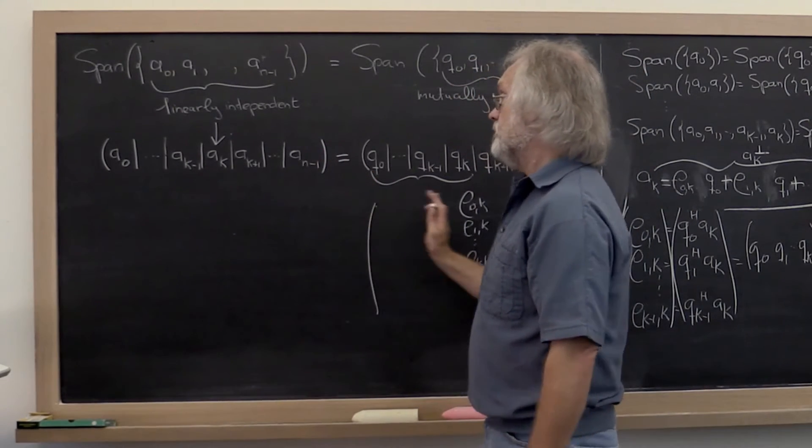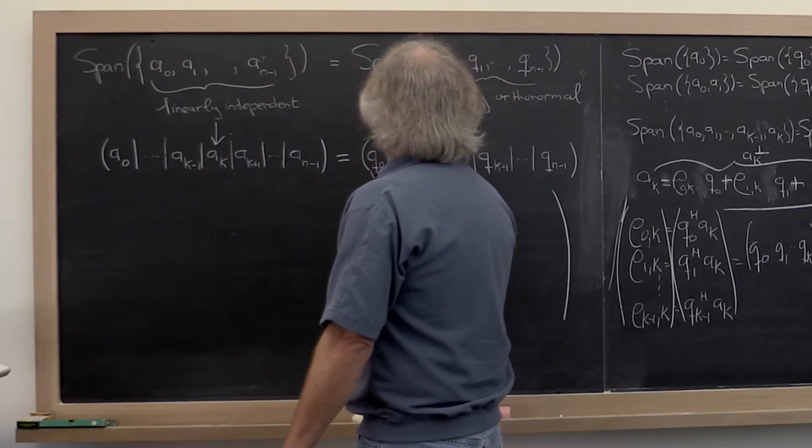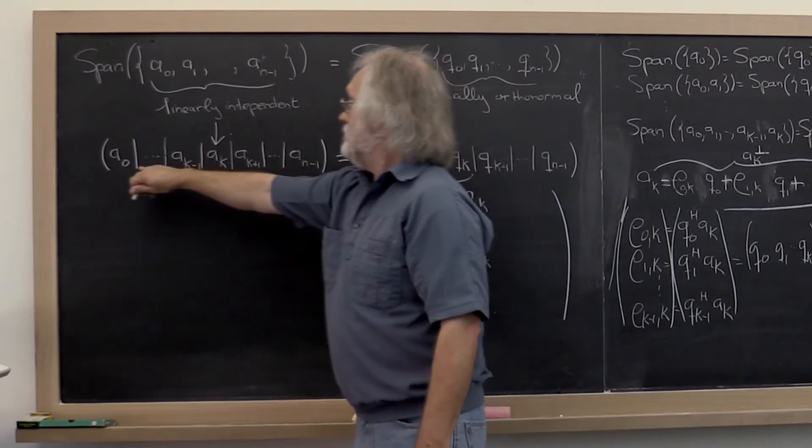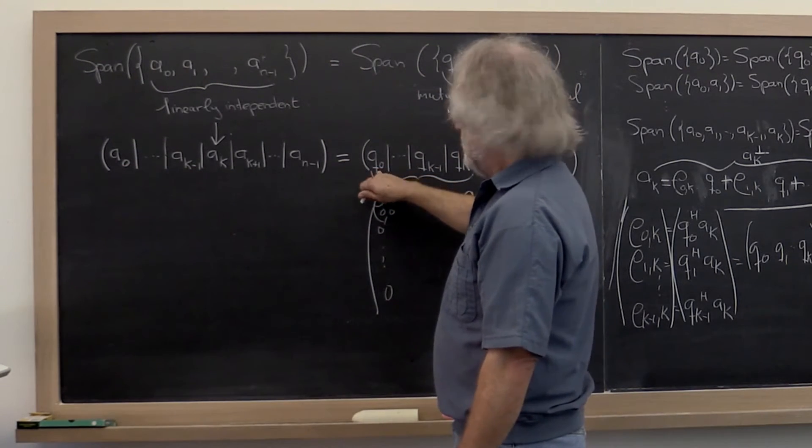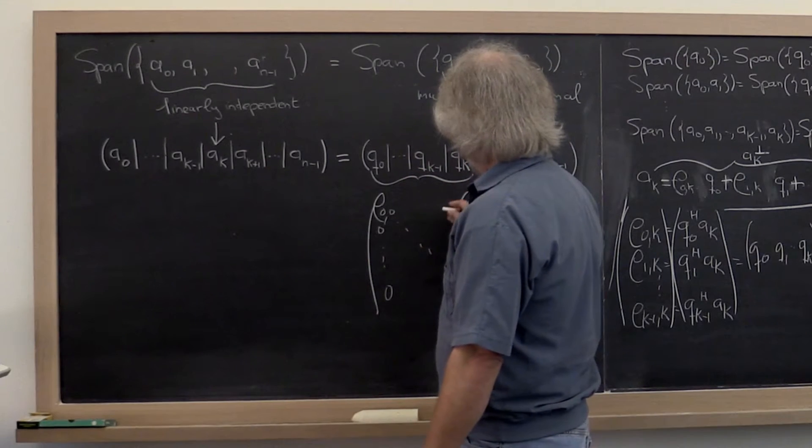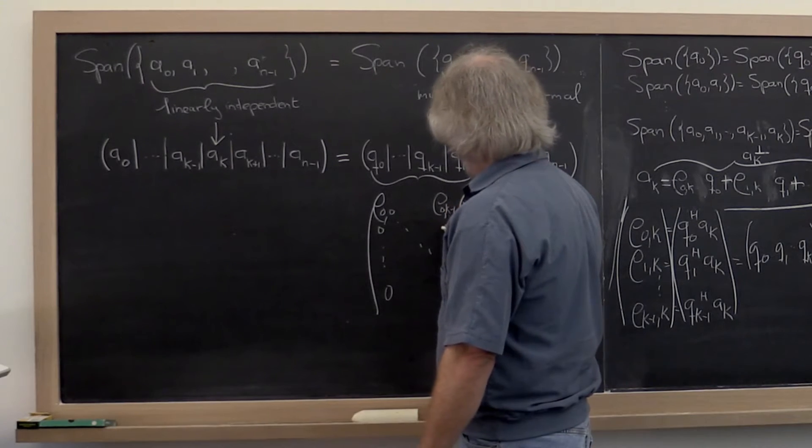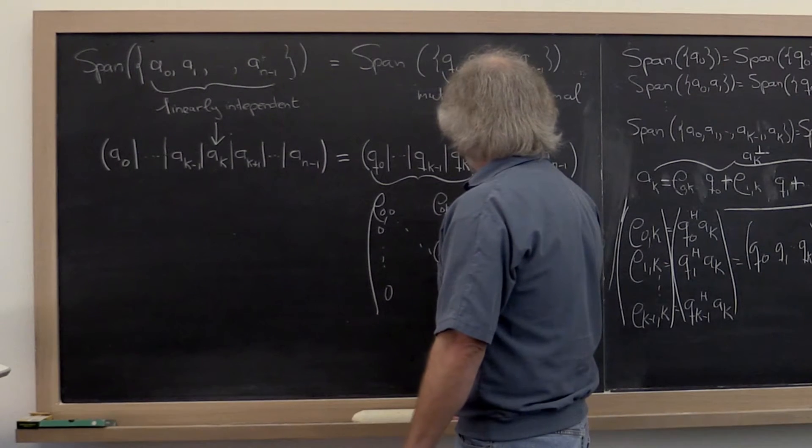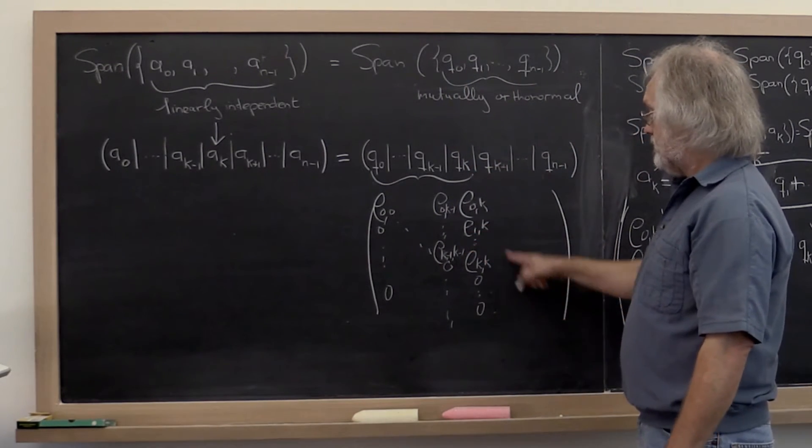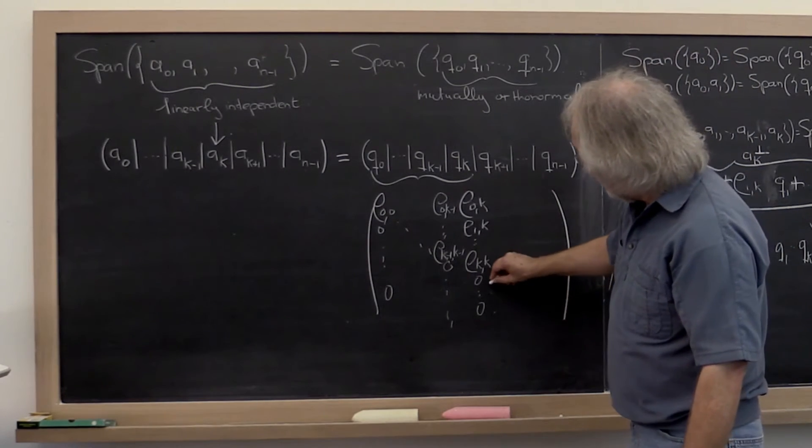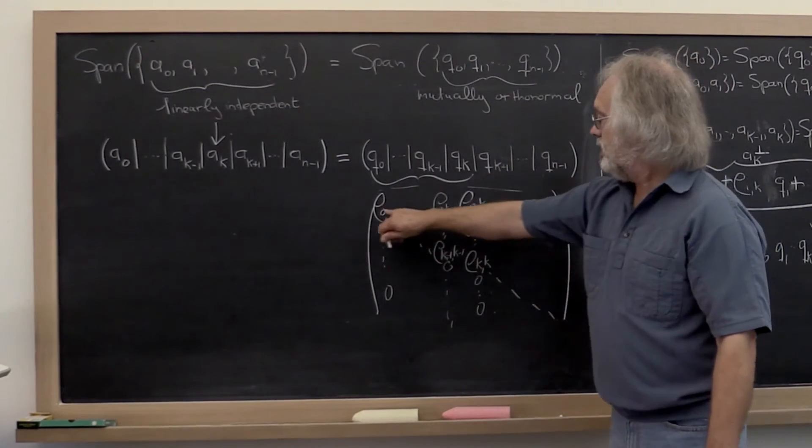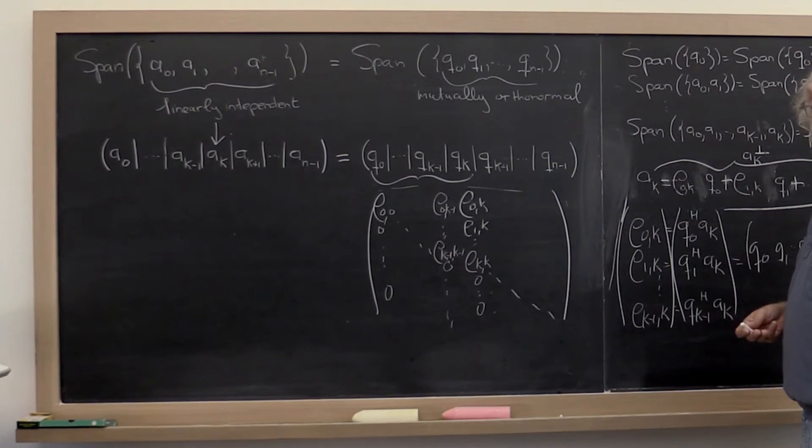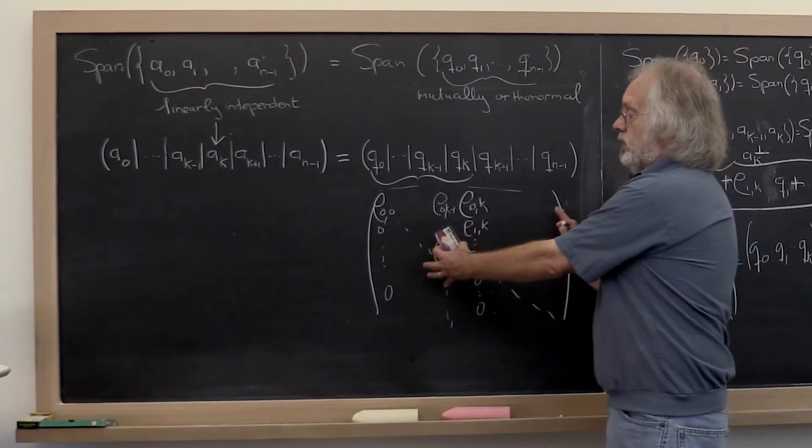But you can do that for all previous columns and all subsequent columns. And what you get is row 0 here with zeroes below it. That's because A_0 is just rho_{0,0} times q_0. And then the same thing for the second column and so forth. Eventually you get rho_{0,k-1} through rho_{k-1,k-1} and then zeros for the rest. And obviously that continues past this column index with k as well. And the point I'm trying to make here is that all of these scalars that we computed, all of these coefficients that we used to take linear combinations of the vectors Q, can be collected into an upper triangular matrix.